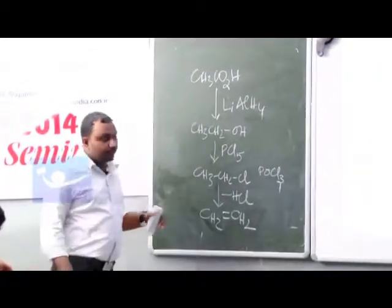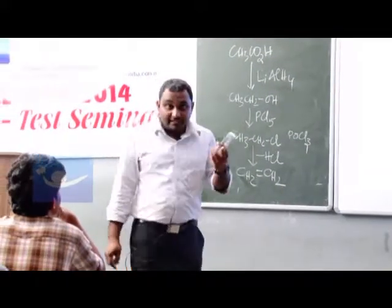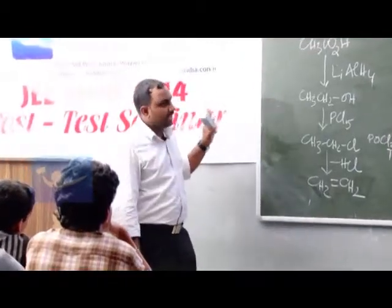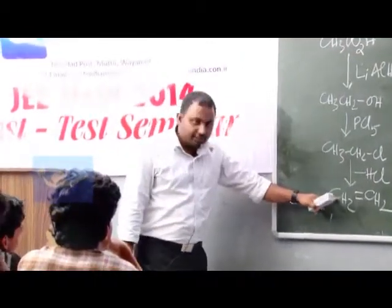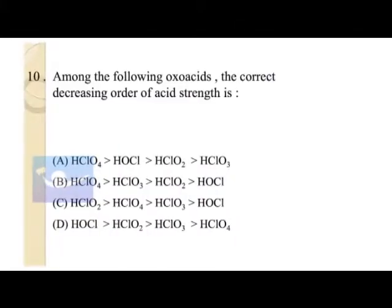HCl, so what is the product? Ethylene will be the product. Alcoholic potash is for elimination of hydrogen halide from alkyl halide.